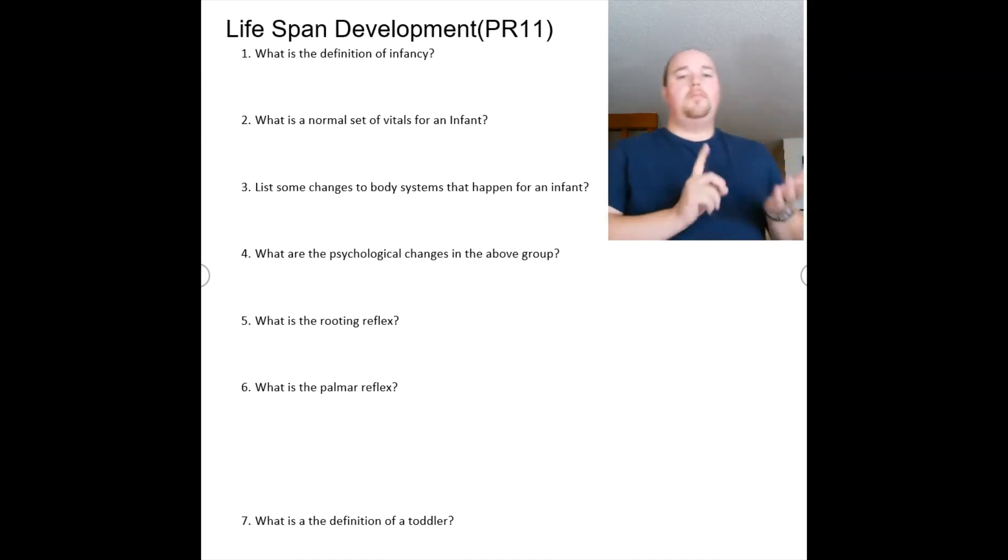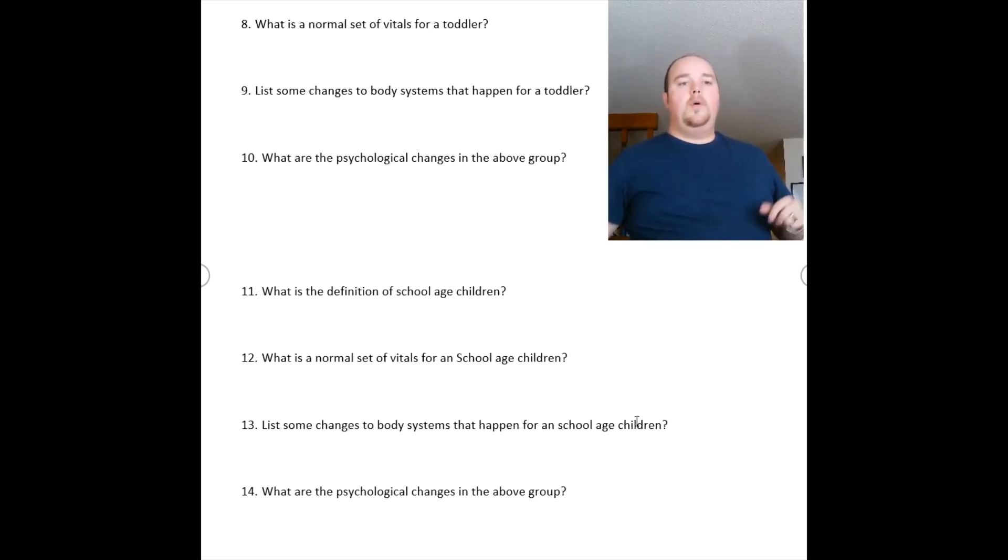And then the palmer reflex. When you put something inside your palm, your hand grasps it. It's the same kind of concept that when you throw a football and you try to grab it, you grab it and catch it. That's a palmer reflex. But in the children, when you put your hand and put a finger inside their hand, their hand is just going to naturally grab it. That's the palmer reflex. Also, we need to understand what are the normal set of vitals for a toddler. Changes with the body systems of the toddler, physiologic changes, it's going to happen with each one of these age groups. But what is the definition of a toddler? What is the definition of a school-aged child?